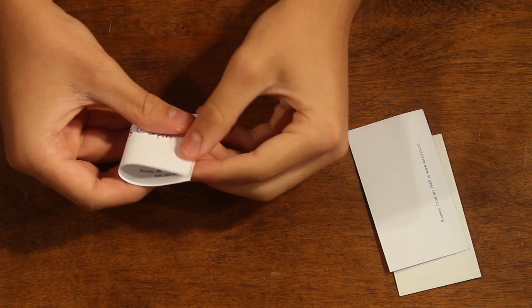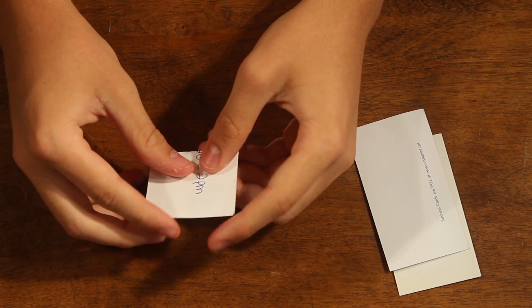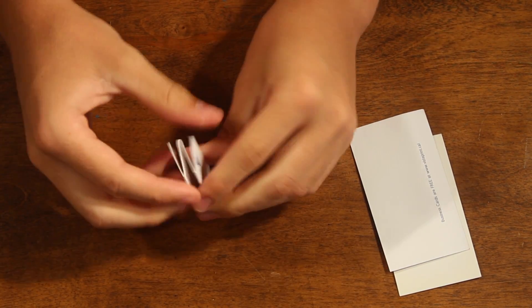Step seven, we're going to be taking our business cards, folding them in half, and then folding them back out to make a W. This will act as our spring on our speaker.